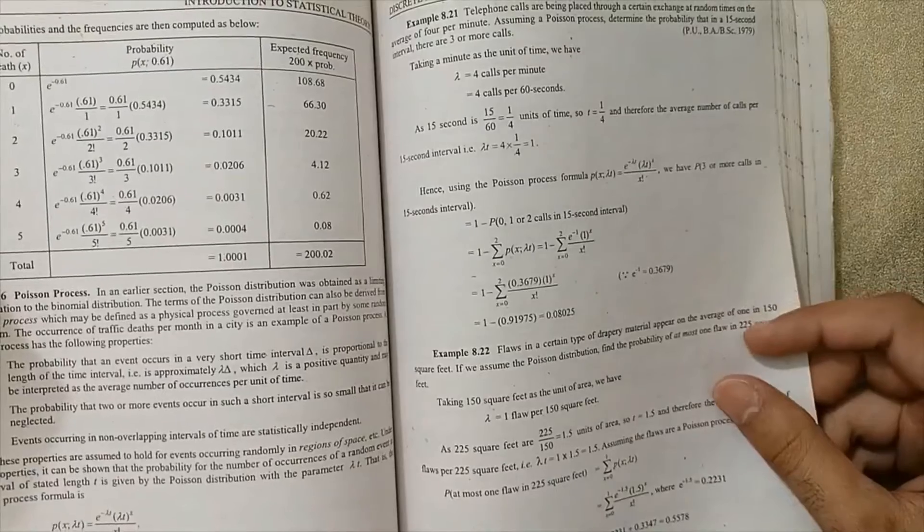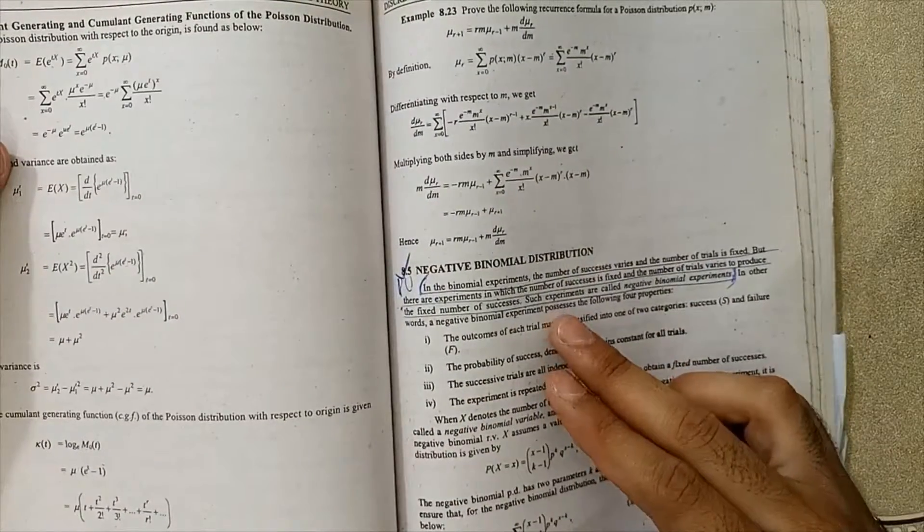Now Poisson process is also a very important topic and how to calculate the Poisson process. Negative binomial distribution is very important for exams.